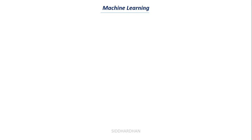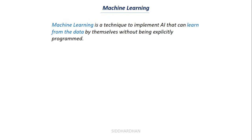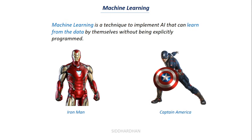Now let's understand machine learning. Machine learning is a technique to implement artificial intelligence that can learn from data by itself without being explicitly programmed. For example, suppose I want a system to detect whether an image is of Iron Man or Captain America. With a machine learning approach, we feed the algorithm numerous images of both Iron Man and Captain America and tell it which images belong to which character. The algorithm then finds patterns between the images on its own, and when given a new image, it can correctly predict whether it is Iron Man or Captain America.